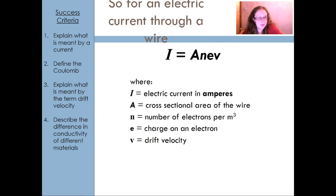So I is going to be current in amps, A is the cross-sectional area of the wire, n is the number of electrons per meter cubed. It's also called the electron number density. Remember that one. They try to use that term in the exam quite a lot. And e is the charge on the electron obviously and v is what we're going to call drift velocity.